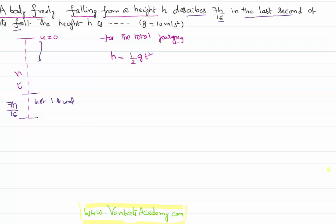So it has covered all this remaining distance. How much is that remaining distance? H - 7H/16, that is 9H/16, in all the time other than that last one second. Therefore, the displacement that it has covered in all the time other than that last one second, which is (t-1) seconds,